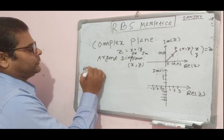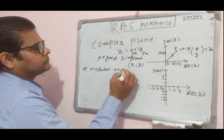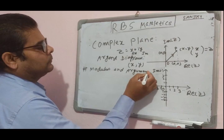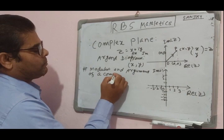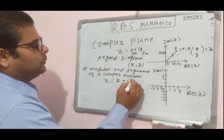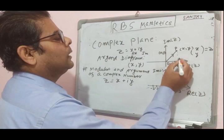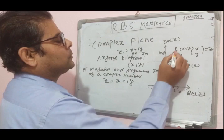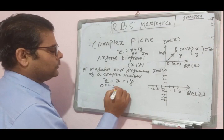Now let's discuss the modulus and argument of a complex number. For z = x + iy, the distance OP can be found using the Pythagorean theorem: OP² = OM² + PM², where OM = x and PM = y.